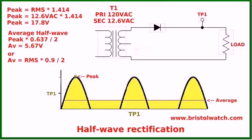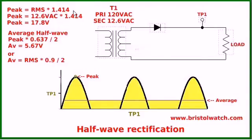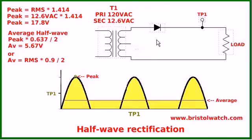Pictured here is a half-wave diode rectifier, presented in an earlier video. Note these formulas: Peak is the highest point on the half cycle — only half of the sine wave is utilized, the other half is lost. Your RMS voltage is 12.6. RMS times 1.414 gives peak, which is close to 18 volts. Average is the DC equivalent power transfer — that's peak times 0.637 divided by 2, or RMS times 0.9 divided by 2.